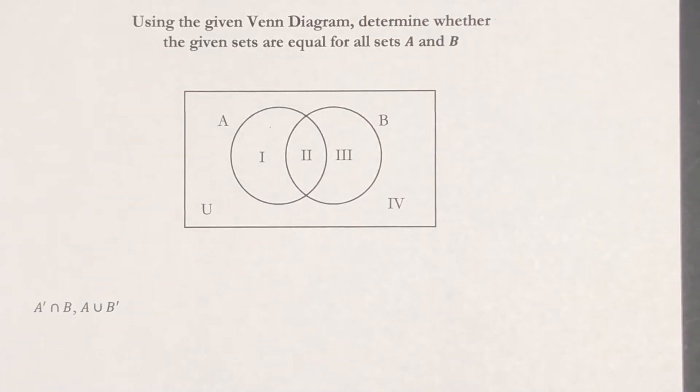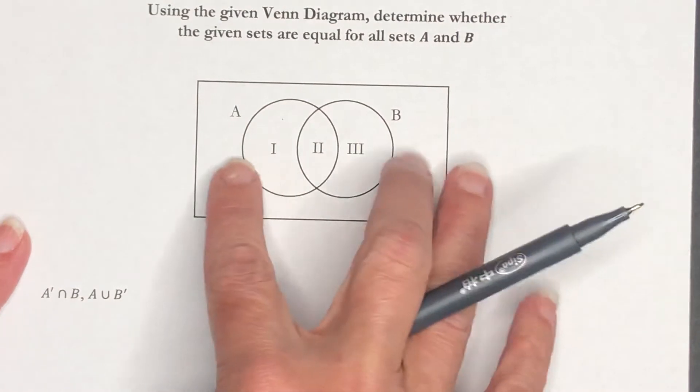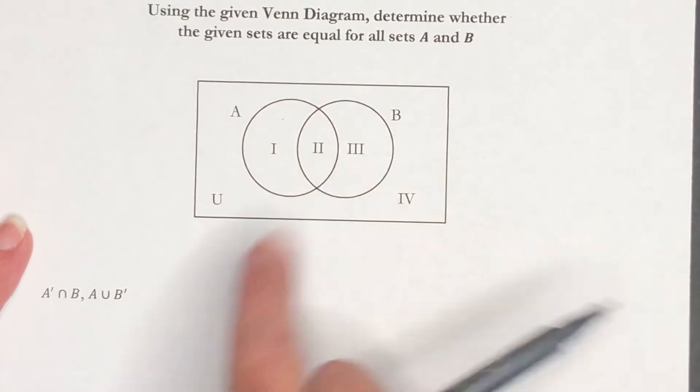This is part 3 to section 2.4. This time we're given a simpler Venn diagram with four regions in it because we have two sets, not three.